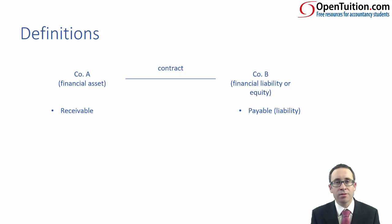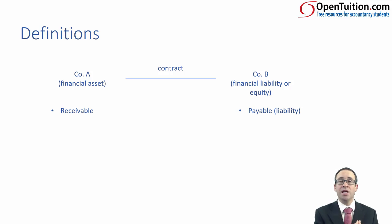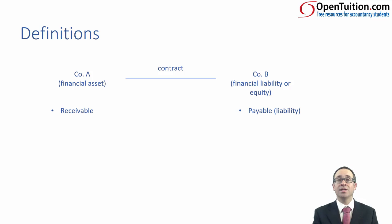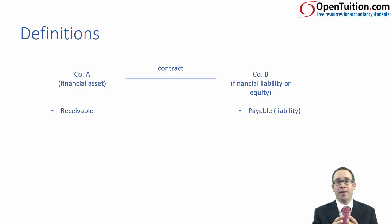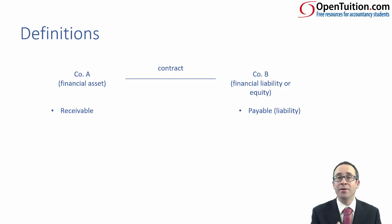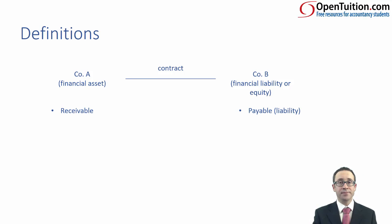You may never have thought about that before. What this means is that your receivable is a financial asset, and that financial asset could be impaired. So forget about irrecoverable debts and allowance for doubtful receivables — we need to impair that financial asset. The rules for impairment of a receivable are covered within IFRS 9, and we'll touch upon that later.